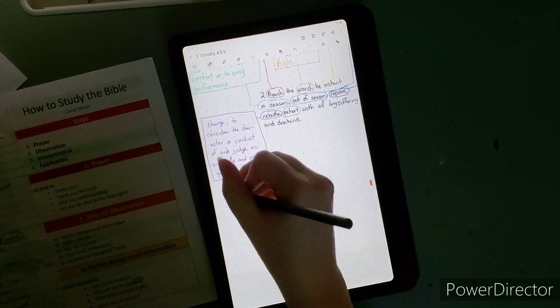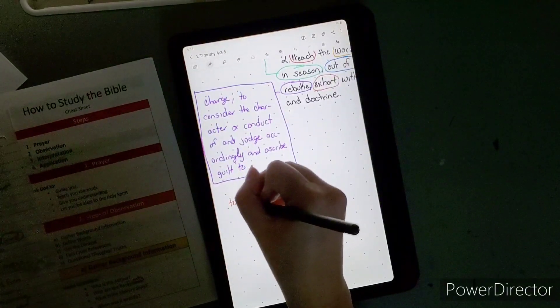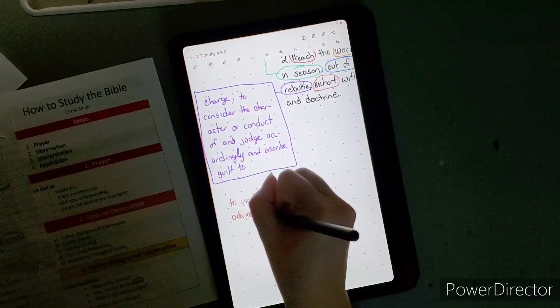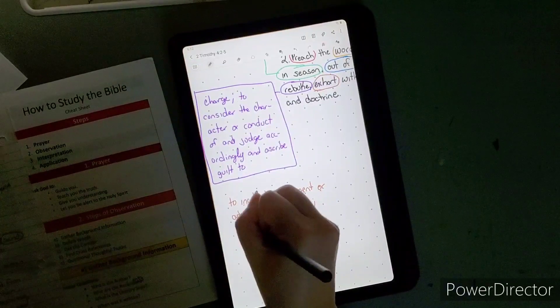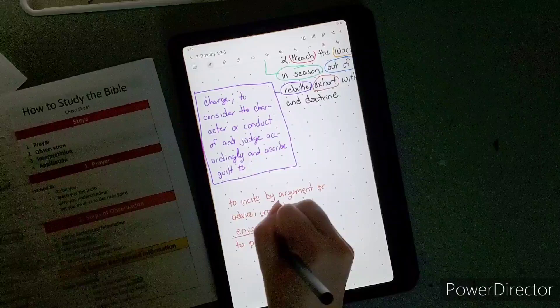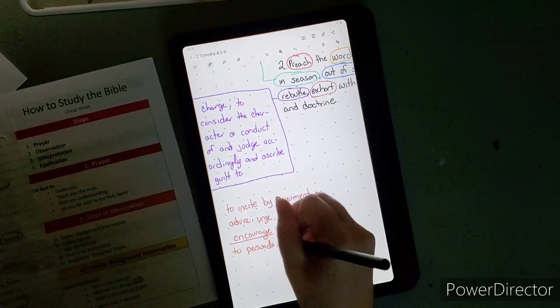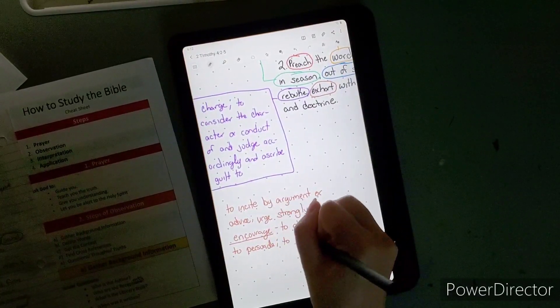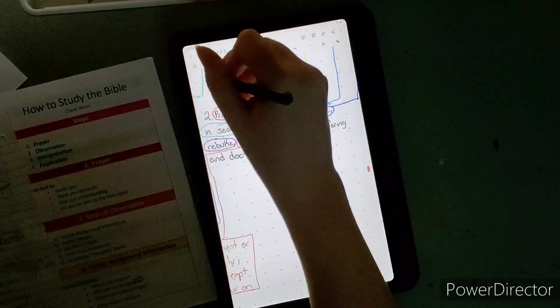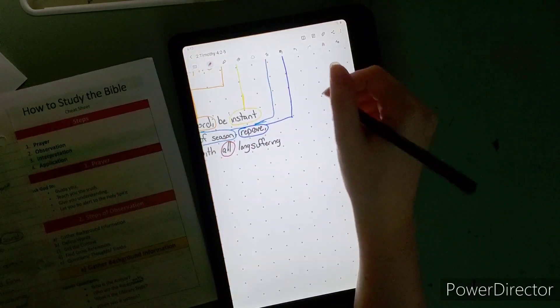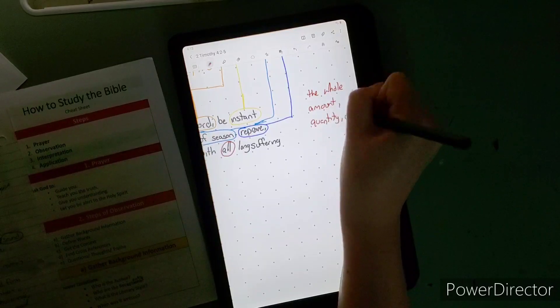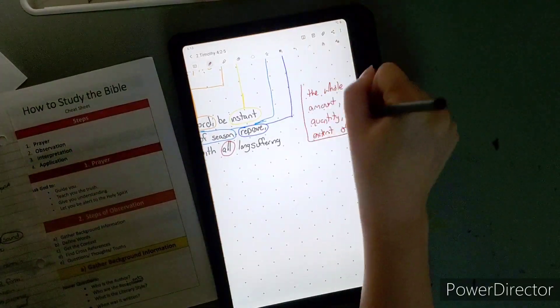The next thing is exhort. Exhort is to incite by argument or advice, urge strongly, basically like to encourage, to attempt to persuade, urge, or to spur on. So basically after you rebuke someone, you want to exhort them. Give them evidence with scripture and urge strongly to keep on going, be like, look, you are wrong, but repent and really follow God. It's kind of what you need to do in that order: correct, rebuke, exhort.